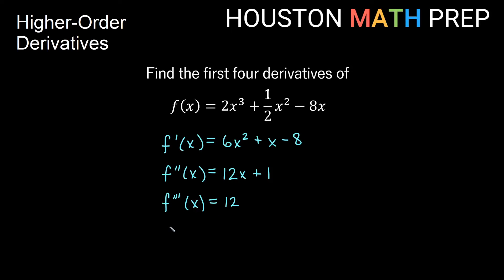Our fourth derivative — we write the order in parentheses, so it looks like an exponent but it's not. If we take the derivative of 12, which is just a constant, our fourth derivative is 0. And because this is 0, every derivative after that will be 0 as well. But these are our first four derivatives of this function.